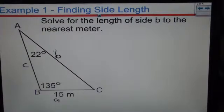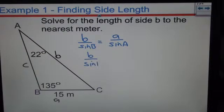That fits into our sine law rule that we must know the angle and the side opposite it and another angle in the triangle. So b over sine b. Remember capitals for angles, lowercase for sides. A over sine A. And then I fill in some numbers. b over sine 135 equals 15 over sine 22.